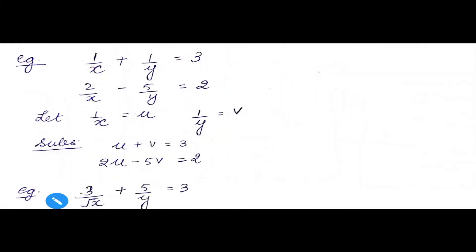Next question: 1 upon x plus 1 upon y equals 3, and 2 upon x minus 5 by y equals 2. Again, this is not a pair of linear equations. Why? Because the power of x here is minus 1 — since 1 upon x means x to the power minus 1 — and y's power is also minus 1. So this is not linear, and we have to convert it into linear form.